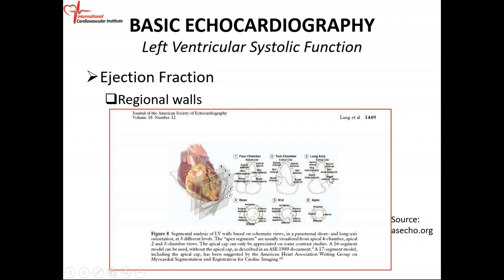For your apical three-chamber view, or sometimes we call it the long axis view, this is actually your anterior septum, and this is the inferior lateral wall. You divide it the same way — basal, mid, and apical for the anterior septum, and basal, mid, and apical for the inferior lateral wall.